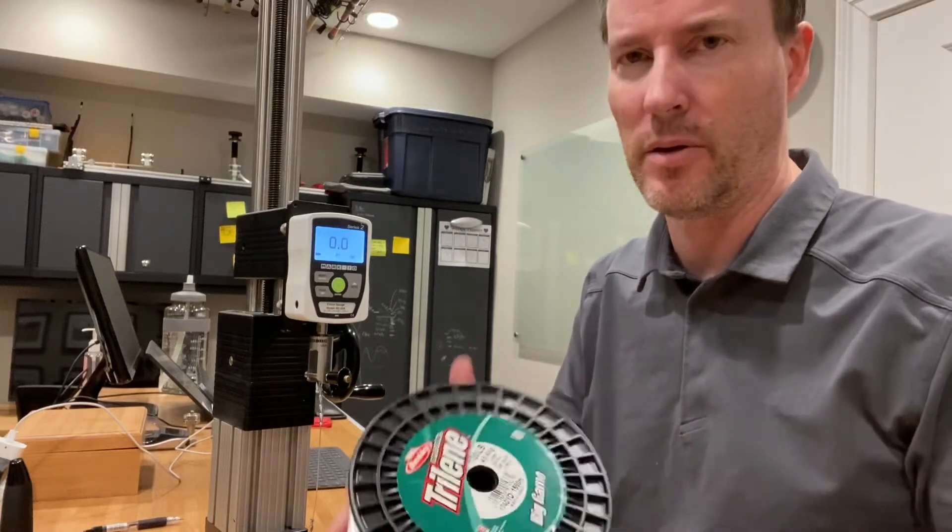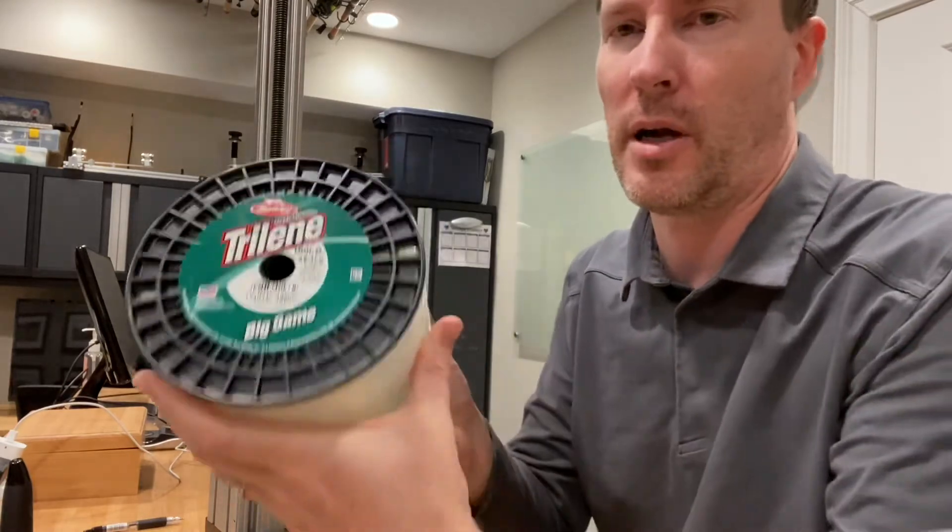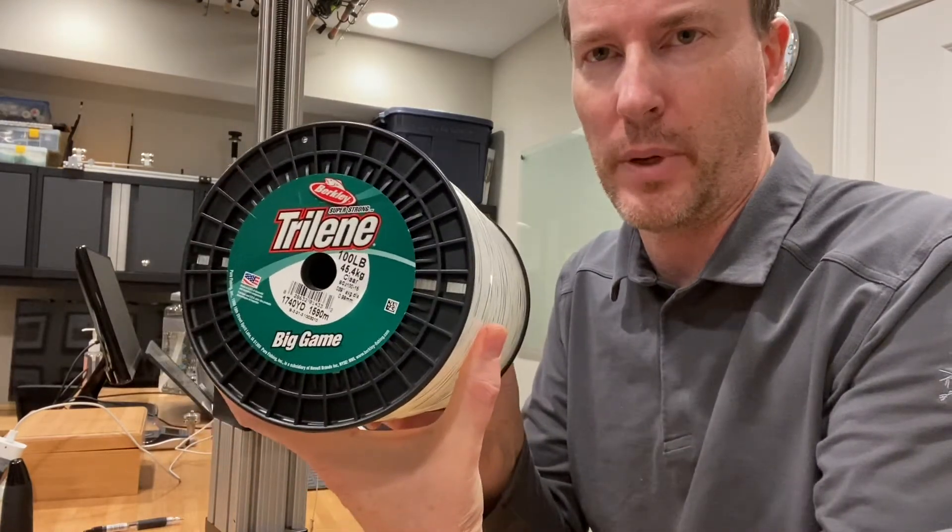Hey guys, it's Art Weston again. I'm going to be doing another mainline strength test for Berkley's Tri-Lean Big Game in 100-pound monofilament.